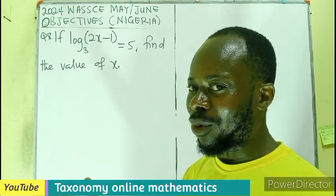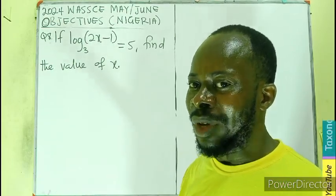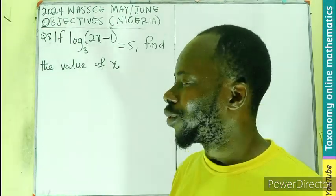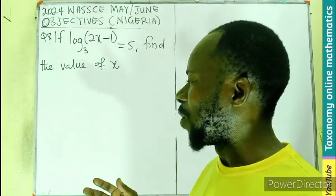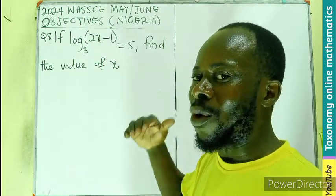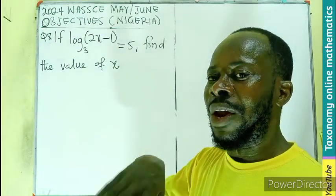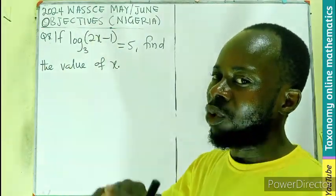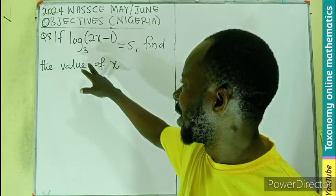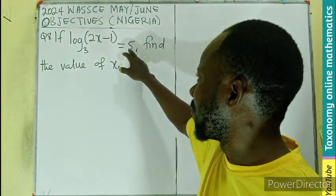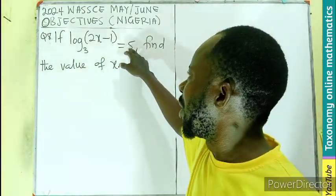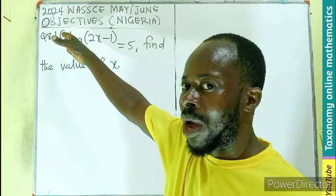You know, from our previous episode on the logarithm, we did a lot of examples on logarithm. If you have a logarithm at one end and a constant at the other end, you can just transform the logarithm into indices. Then you find a value of the unknown, meaning the base here, take the 5 as an exponent equals to the argument, cancelling the logarithm.